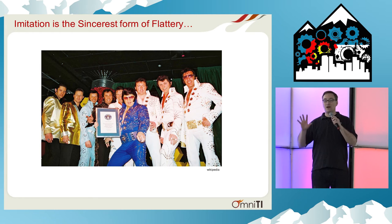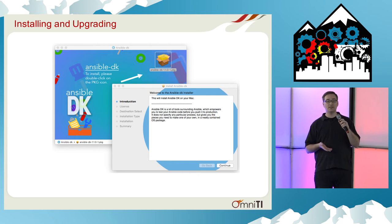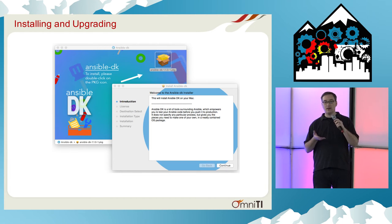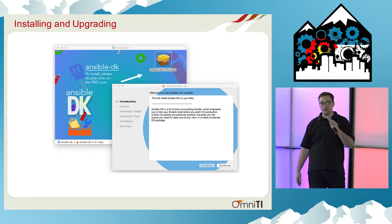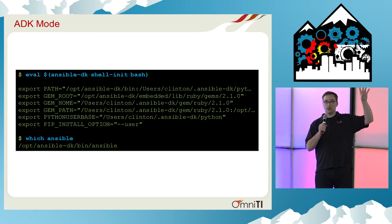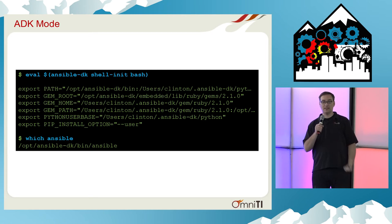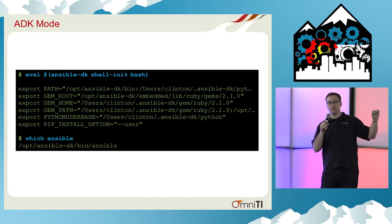So enough about what it is — let's talk about the experience. When you actually install or upgrade Ansible DK, it's very straightforward. It's just an operating system package. You just install it normally after you download it, and to upgrade it, it just overwrites everything in /opt/ansible-dk. You don't ever have to uninstall it or worry about any dependencies. To run it, it's really straightforward — you just get a whole bunch of exports that set up your Ruby and Python environments, and it also includes Ansible itself of course. When you run things, you're getting everything out of the Ansible DK package.